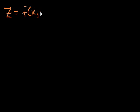In the last video, we had a three-dimensional surface where the height z was a function of x and y, and it gave a surface in three-dimensional space. Now let's try to get our heads around what the gradient of a function of three variables looks like.